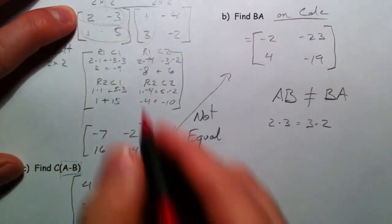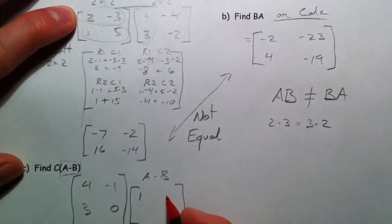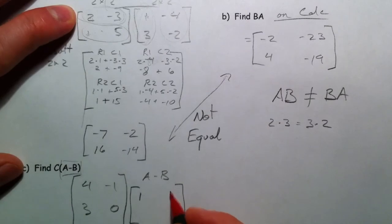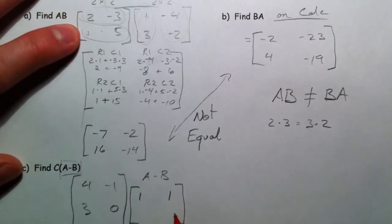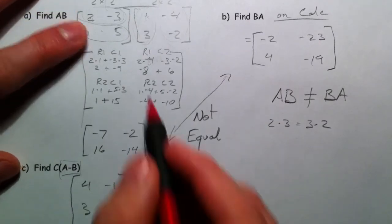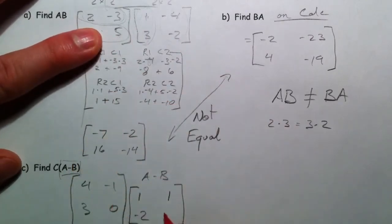So A minus B, we have A and B up here. So 2 minus 1, negative 3 minus a negative 4, so that's really adding 4. 1 minus 3 is a negative 2. And 5 minus a negative 2 is really 7.